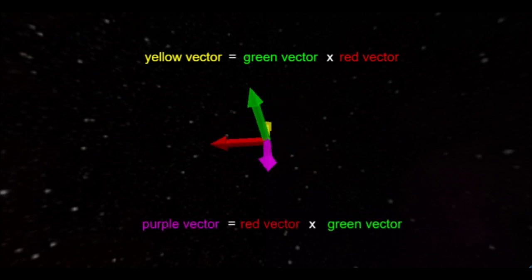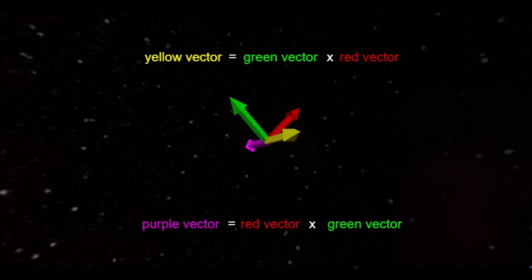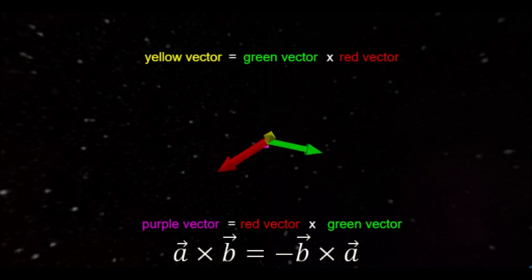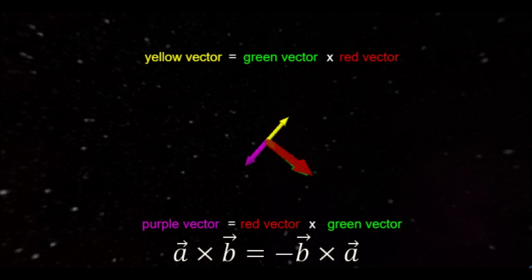And three, if you reverse the order of the vectors in the cross product, the resulting vector flips around. This last part is a weird rule that goes against everything you've learned about multiplication in the third grade, but it highlights the fact that the cross product likes asymmetry.